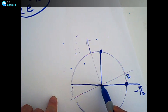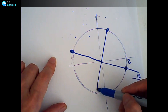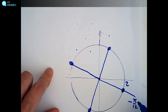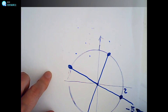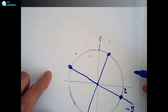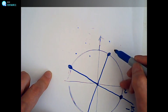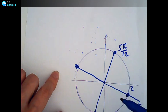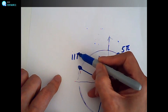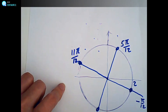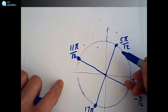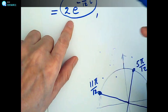Since this is a fourth root, I add 90 degrees repeatedly to find the other roots. Starting from negative pi over 12, adding 6 pi over 12 gives 5 pi over 12, then 11 pi over 12, then 17 pi over 12.